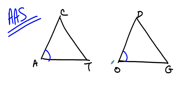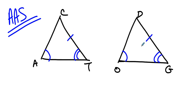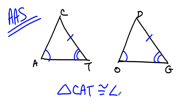Angle-angle-side means you've got one pair of angles congruent, and then another pair of angles congruent, and then a side, but the side is not between the angles — it's not this side congruent to that one, it's this congruent to that, or this congruent to that. For the purpose of argument, say it's this congruent to that. So the question is: is triangle CAT congruent to triangle DOG? And the answer is yes, and here's how we know.